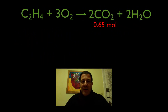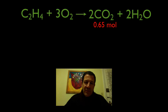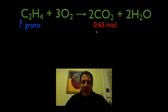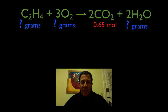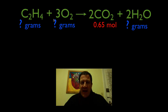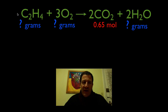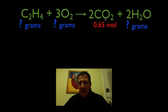We have a combustion of ethylene, C2H4. We've been given that we want to produce 0.65 moles of CO2, and we want to figure out how many grams of ethylene and oxygen we're going to need, and how many grams of water we're also going to produce. Our chemical equation gives us a molar relationship — one mole of ethylene plus three moles of oxygen will yield two moles of carbon dioxide and two moles of water.